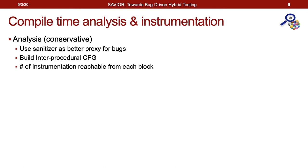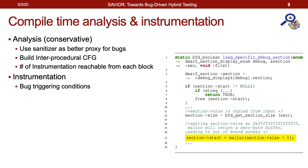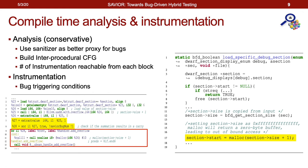Given a program, Xavier first instruments it with different kinds of software sanitizers — such as address sanitizers, memory sanitizers, or undefined behavior sanitizers — and Xavier's design is agnostic to different sanitizers. It then constructs an inter-procedural control flow graph. With the control flow graph, it computes the number of reachable sanitizer instrumentations from each basic block and inserts that number at the location of each basic block. Using the objdump program as an example, for the highlighted bug, the sanitizers mark it as a potential buggy location and instrument the reachable bug number for each basic block as shown in the intermediate representation.